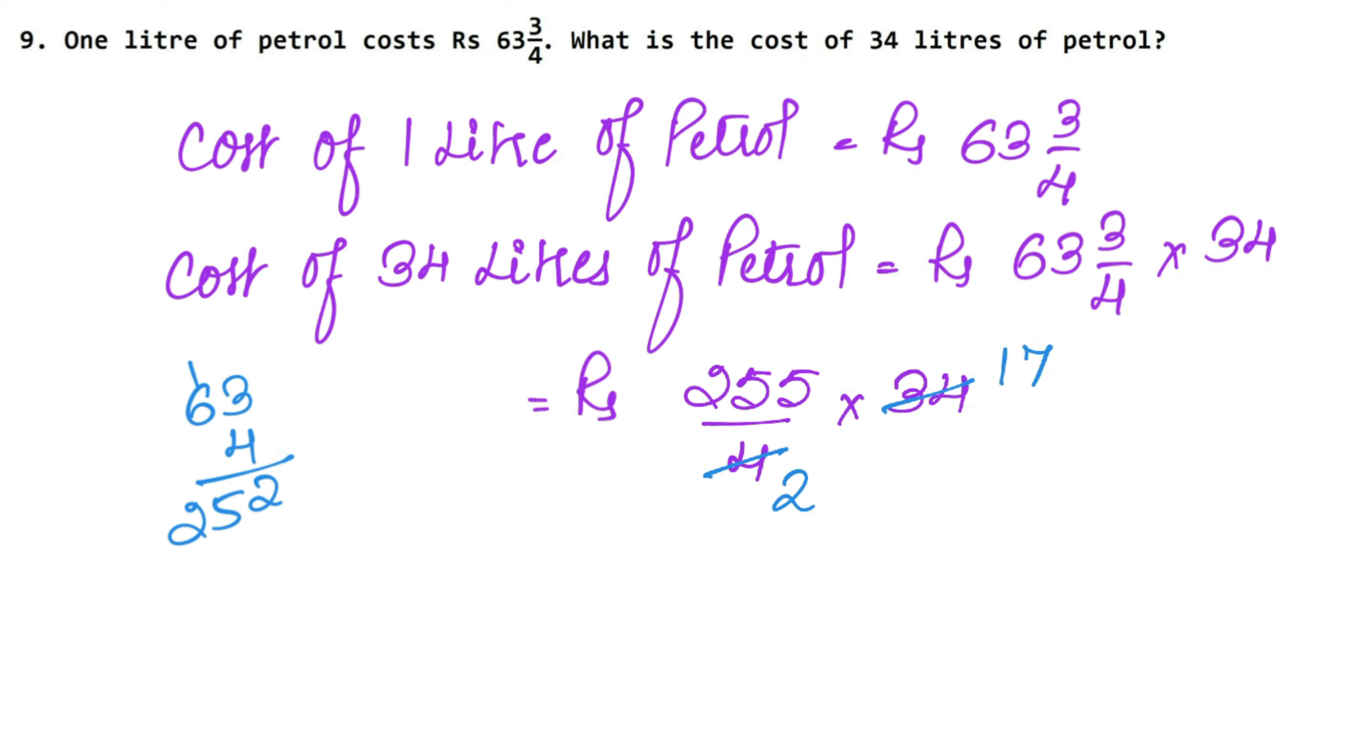Now what is the cost of 255? 2, 1 is 2. 2, 7 is 14. 3, 9 carry 17, 2 is 34, 35, 36, 37, 38, 39, 40, 41, 42 and 43. So this is our 4, 3, 3, 5 upon 2.